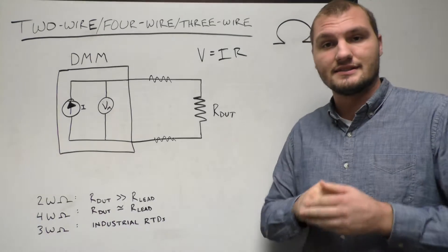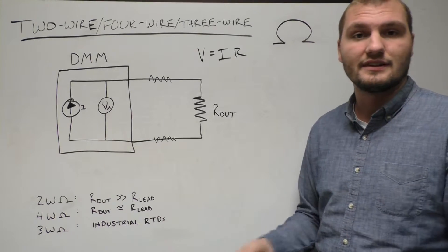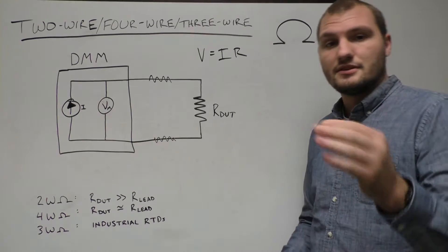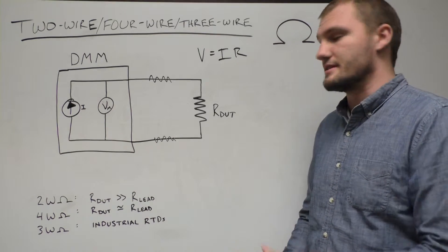Now if your DUT is significantly higher, that's going to be a very small percentage of the error, but as the DUT becomes closer to the resistance of the leads, that error increases.